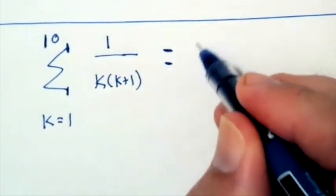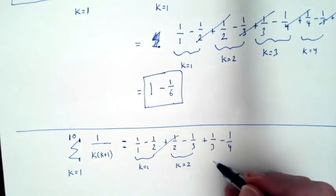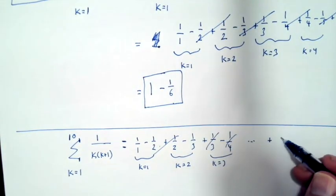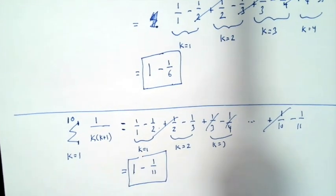If we do sum from k equals 1 to 10 of 1 over k times k plus 1, we have a similar pattern. When we start writing out the terms, things begin cancelling. Everything cancels out except for the first and last terms, and we are left with 1 minus 1 over 11.